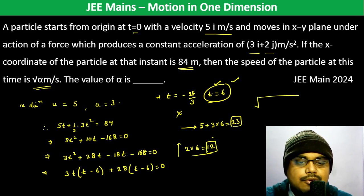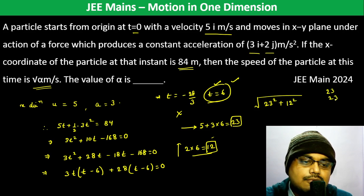Therefore, the speed of the particle will be √(23² + 12²) = √(529 + 144) = √673 m/s. So α = 673.